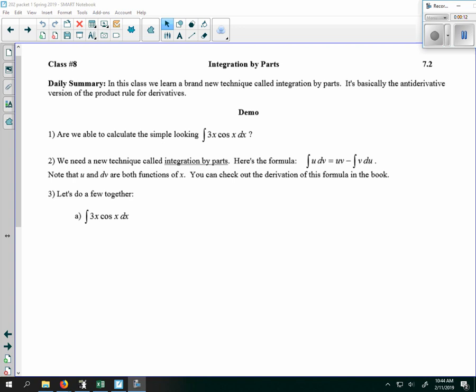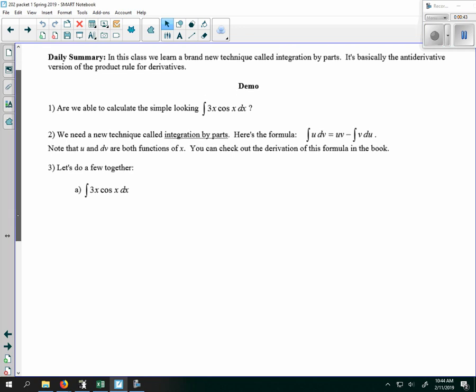So u substitution was the reverse of the chain rule, and integration by parts is the reverse of the product rule. Simply looking at the integral of 3x times cosine x dx, we can't integrate it, because if it said 3x plus cosine x, we could do it term by term, but you can't go factor by factor when you're integrating. So we have to do something that undoes a product.